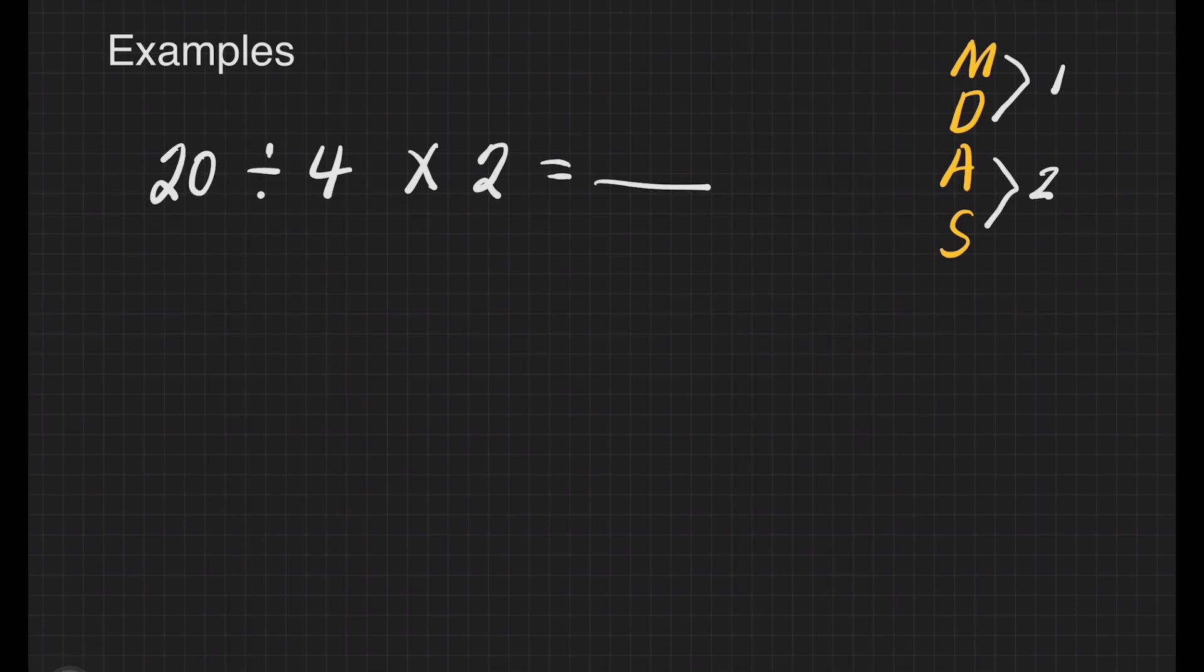So in this case, are we going to multiply first or divide? Since division appears first, we will do division. 20 divided by 4 equals 5. Next, just copy times 2. 5 times 2 equals 10, and that is our final answer.